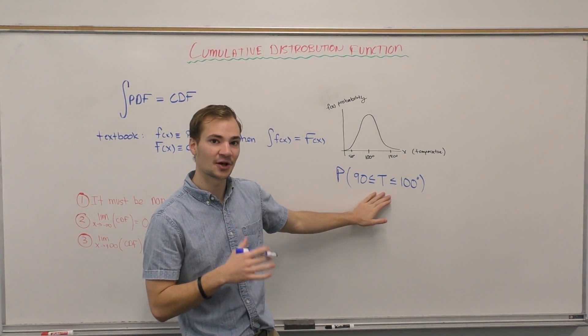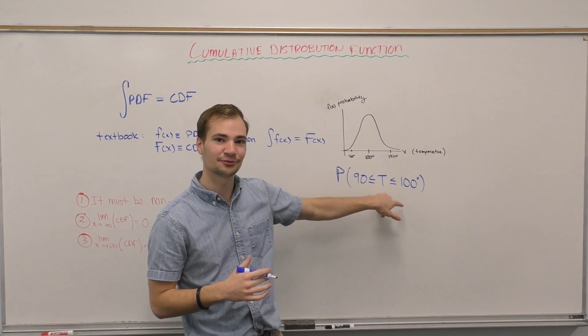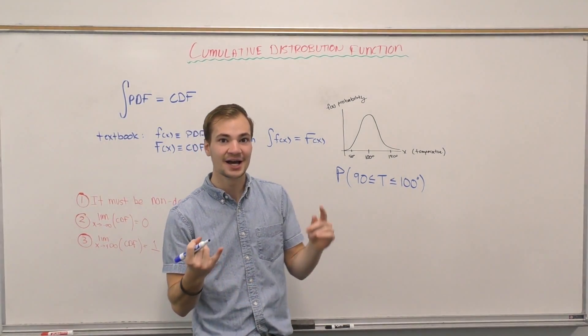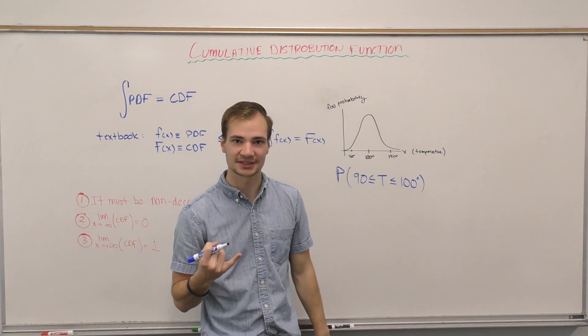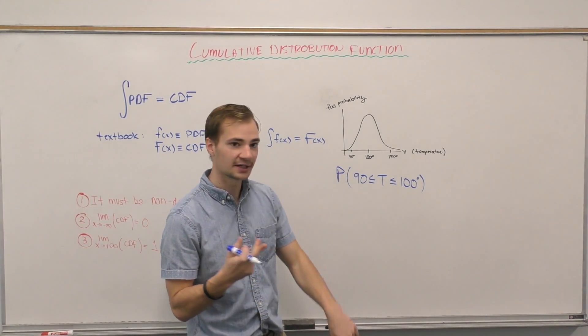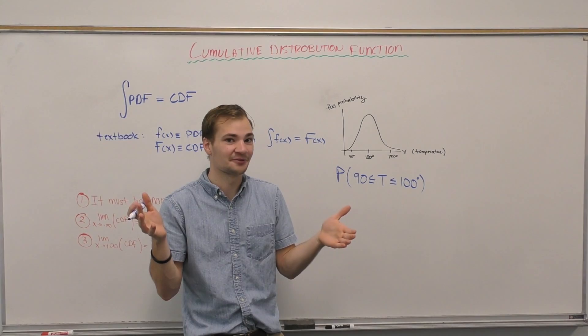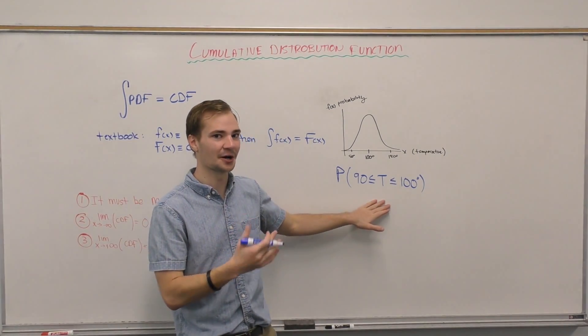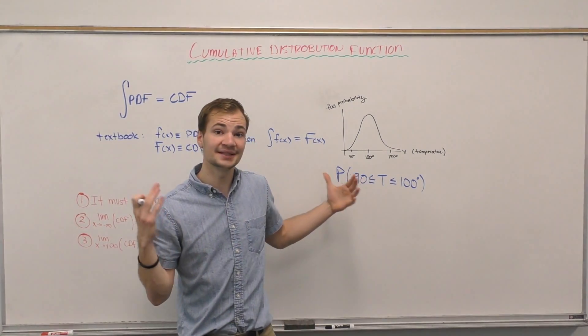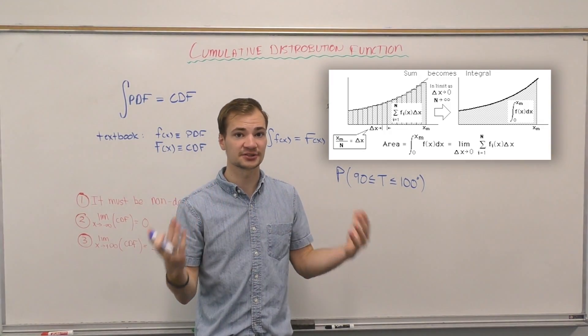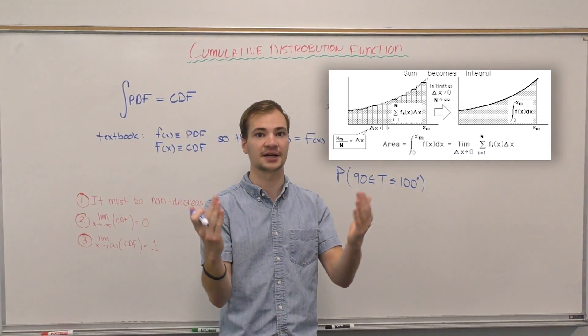But really there's an infinite number of values in between 90 and 100. We can have 90.78563 degrees, we could have 99.99999 degrees. There's an infinite number of values, so we can't just add up the values in between these. We need to use the CDF method which tells us the integral, which will tell us the area.